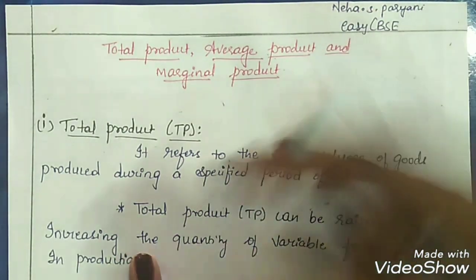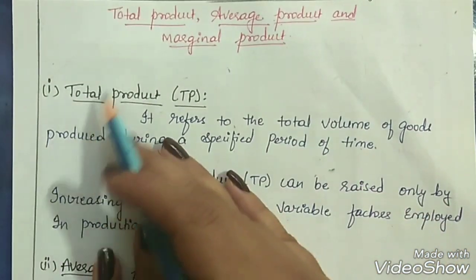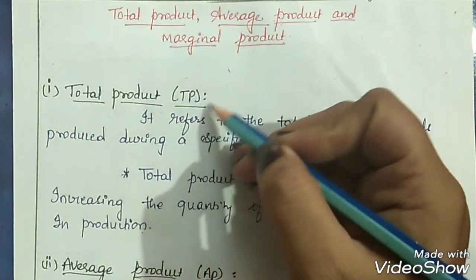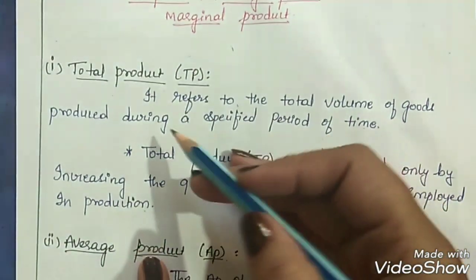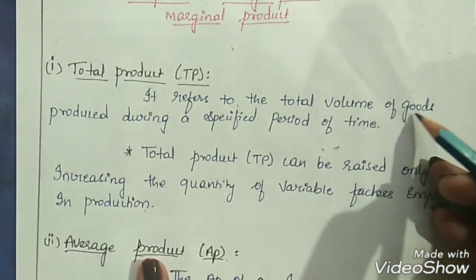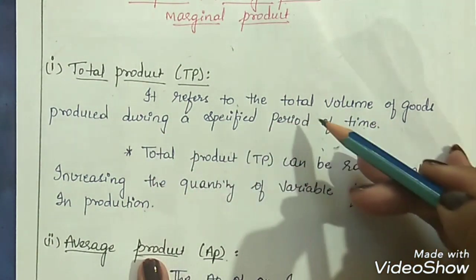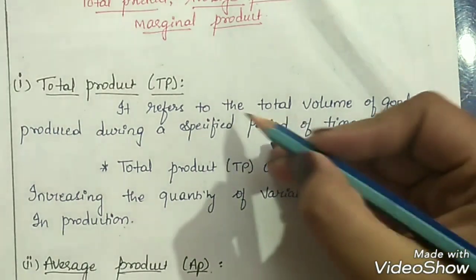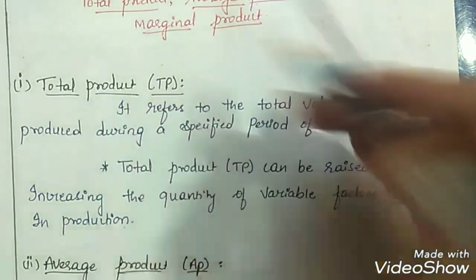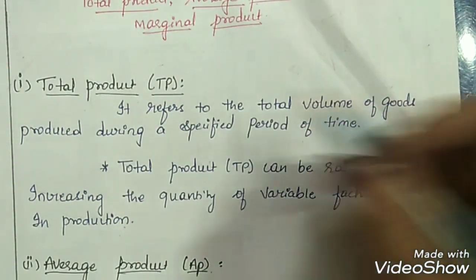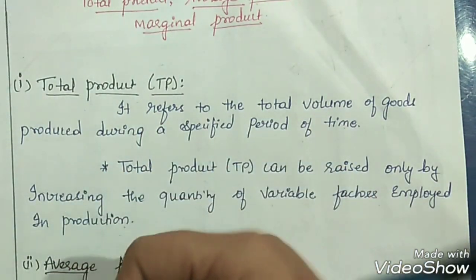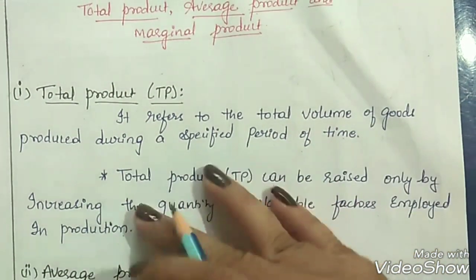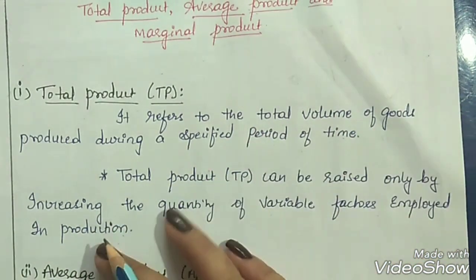So now let's start for today. We will start by understanding the meaning of total product, also called TP. It refers to the total volume of goods produced — or total output — during a specified period of time.